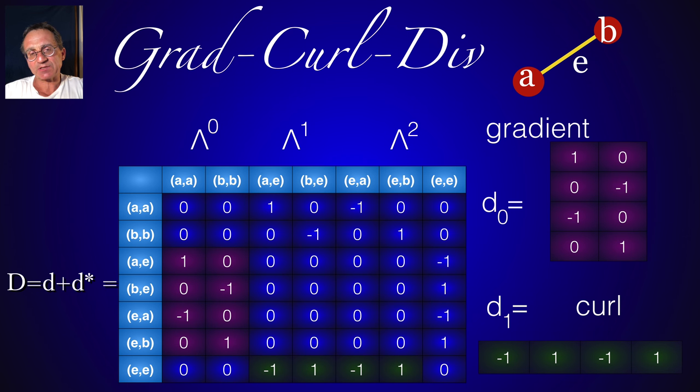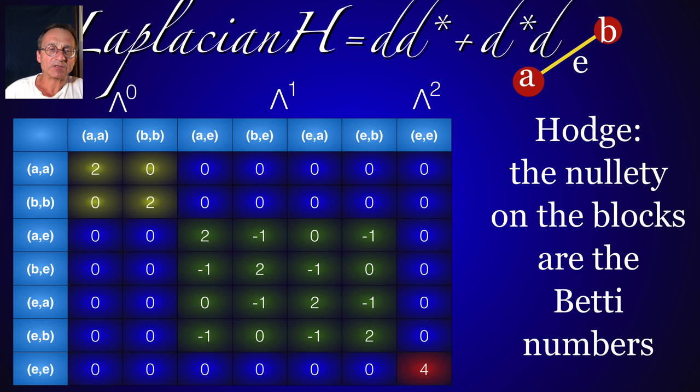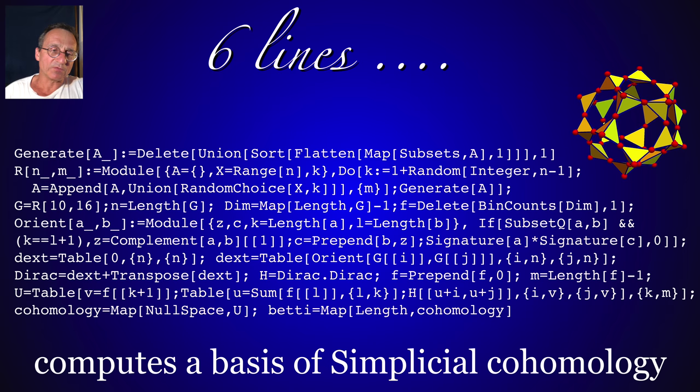So here is the exterior derivative. In that calculus, gradient, curl, and then you can square them, you get the Laplacian, the Hodge Laplacian. And the novelty of these blocks are the Betti numbers. These are the cohomology, and this cohomology adds up in super sums to the Wu characteristic. It can be computed pretty quickly.